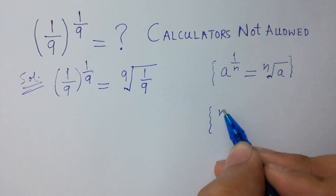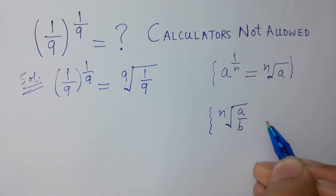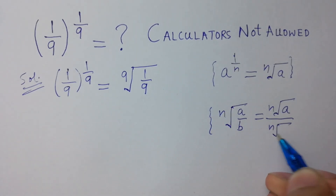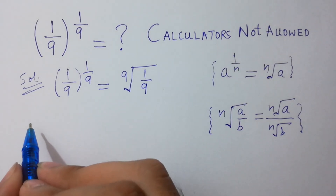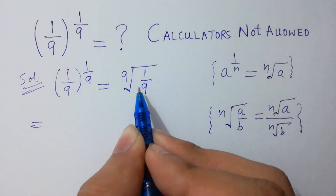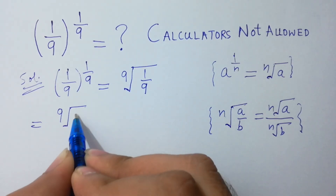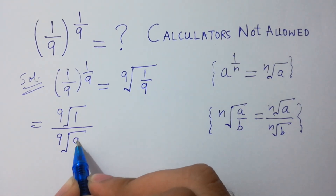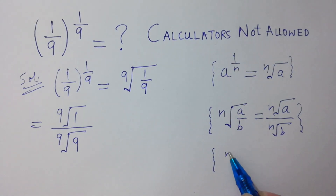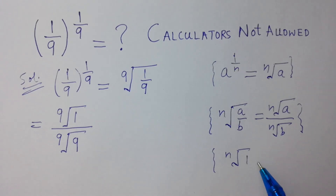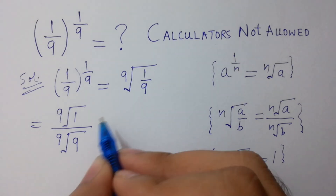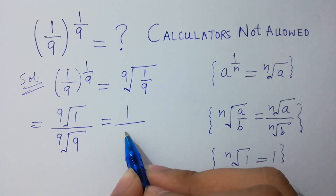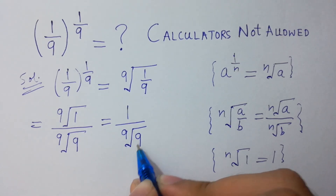Since n root of a over b equals n root a over n root b, so it will be equal to 9 root 1 over 9 root 9. Since n root 1 equals 1, so 9 root 1 equals 1, giving us 1 over 9 root 9. Got it?